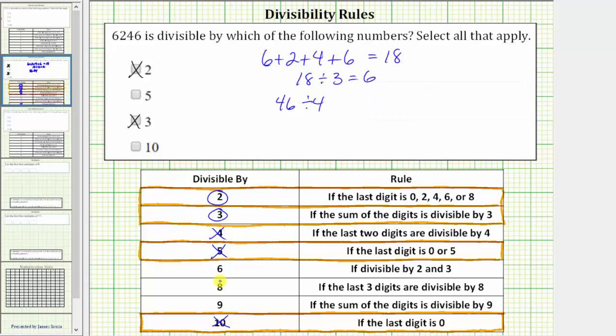A number is divisible by 6 if it's divisible by 2 and 3. And notice how 6,246 is divisible by 2 and 3, and therefore it's also divisible by 6.